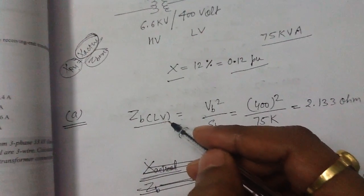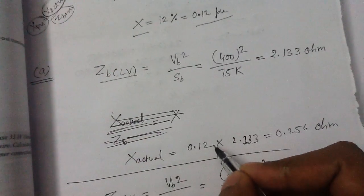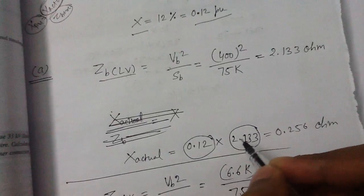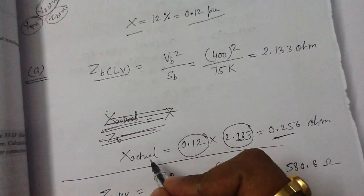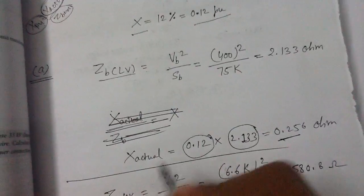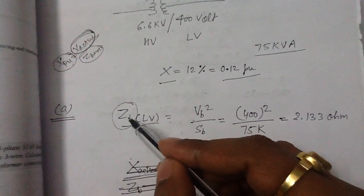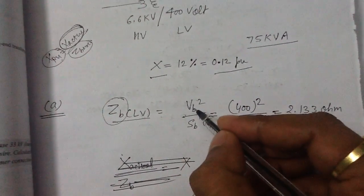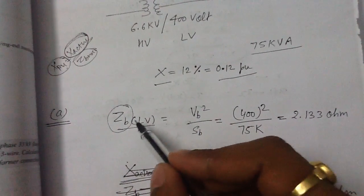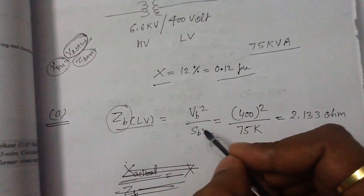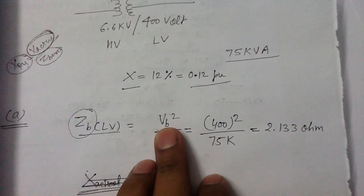If we know the base impedance of the LV side, by multiplying the per-unit value with the base impedance of the LV side, we can get the reactance of the transformer referred to the LV side. The formula for base impedance is base voltage squared divided by S_base.